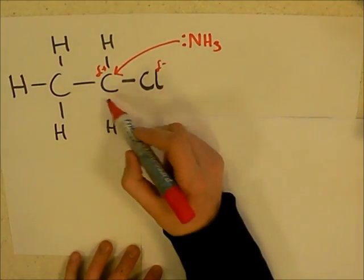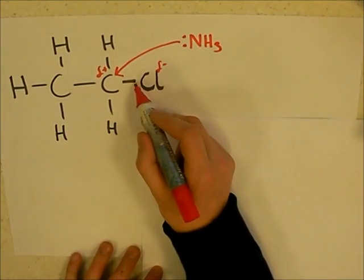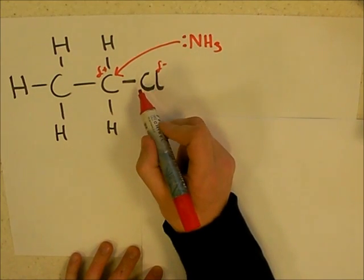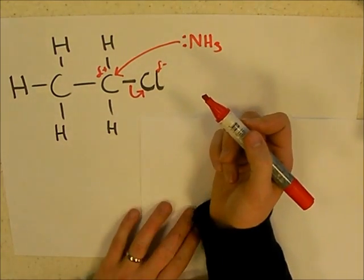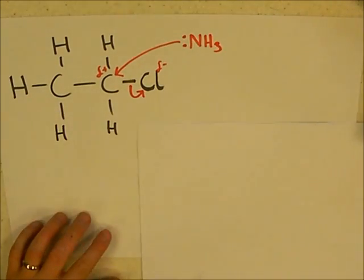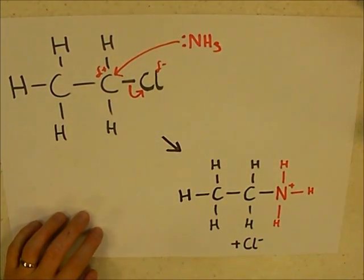And then because this has now got too many electrons, the two electrons that are already near this chlorine are going to jump from the bond onto the chlorine itself, resulting in two products that look something a bit like this.